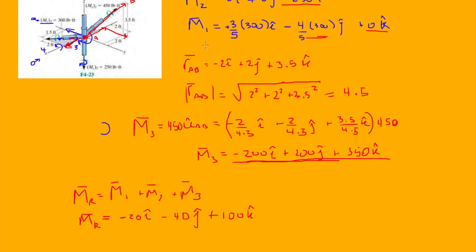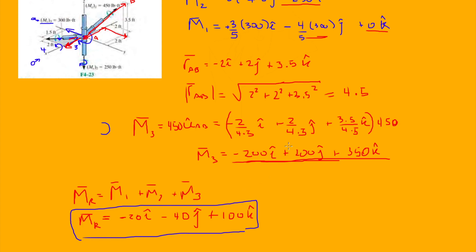I apologize for the earlier sign mistake — I assumed the wrong direction. The key takeaway is to treat a moment just like you would treat a force: they're both vectors. Whether it's M or F, just treat it like any other vector, project it onto x, y, and z, then add all the components to get your resultant. Thanks for sticking with me — check out the other videos for a more fundamental background on these types of problems.